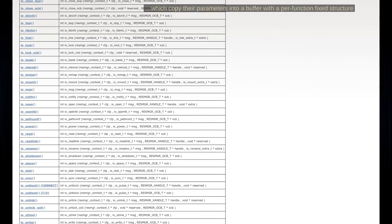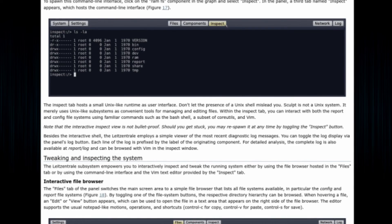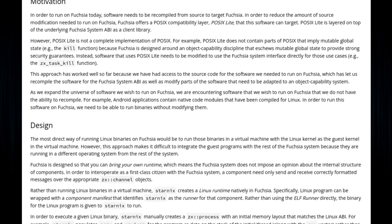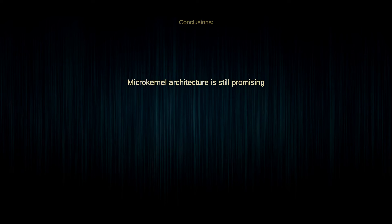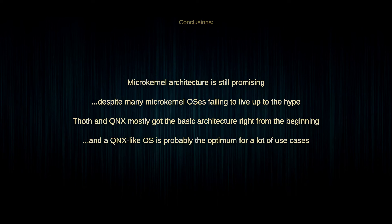Structured message support can just as easily be implemented in optional libraries only for services that actually need it. Still another issue is that some of these systems have various limitations on Unix compatibility, which isn't necessarily a problem for research or embedded OSes, but it significantly limits the available application base for a general-purpose OS. To conclude, I think that micro-kernel architecture still holds a lot of promise despite a few micro-kernel OSes failing to live up to the hype. QNX basically got the general architecture more or less right in the early 80s, and I consider it to be the best balance between architectural purity and practicality of any OS family. A QNX-like OS is probably the optimum within the Unix-like family for a large range of use cases, taking advantage of the superior extensibility, stability, and security of micro-kernels while remaining reasonably compatible with existing Unix code and still having decent performance.